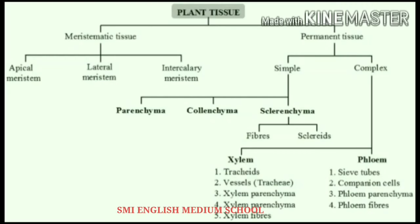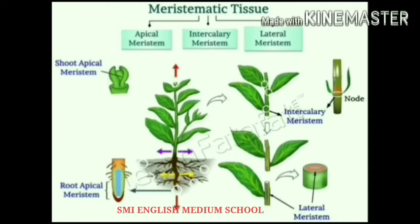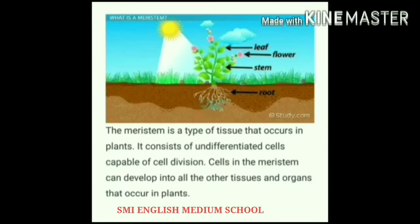First we are going to learn about meristematic tissues. What is a meristem? Meristem is a type of tissue that occurs in plants. It consists of undifferentiated cells capable of cell division. Cells in the meristem can develop into all other tissues and organs that occur in plants.